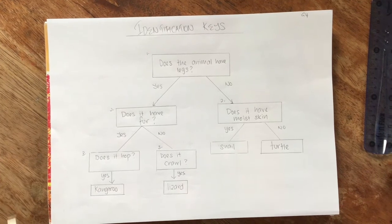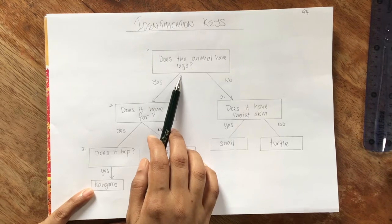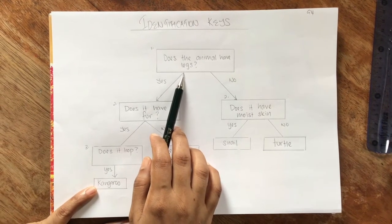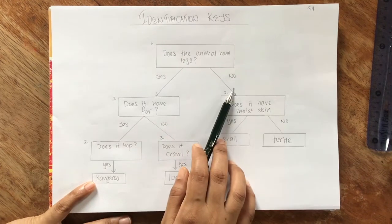For example, teacher's first question is, does the animal have legs? Some animals have legs, so I say yes. Some animals have no legs, I say no.